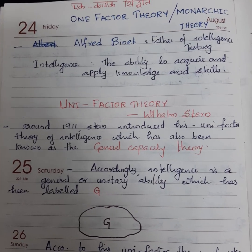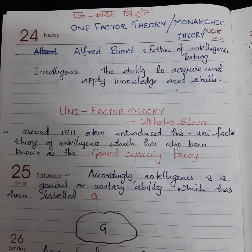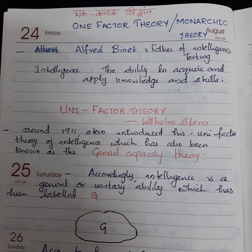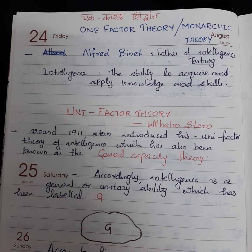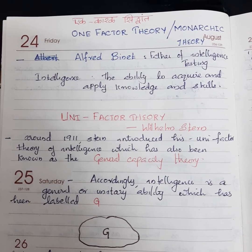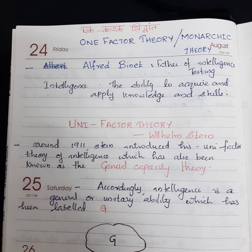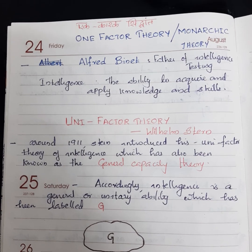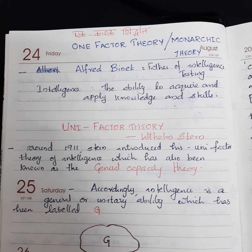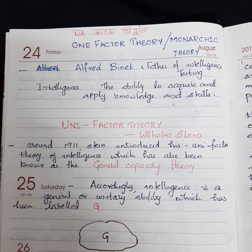Hello everyone, welcome to Exam Trials. In the last video we discussed the concept of intelligence. From this video onwards we are going to discuss different types of intelligence theories. Today's session covers the one-factor theory of intelligence — in Hindi, known as 'Ek Karak Siddhant.' This theory is also known by several names such as the monarchic theory and the unifactor theory.